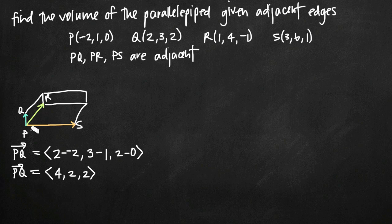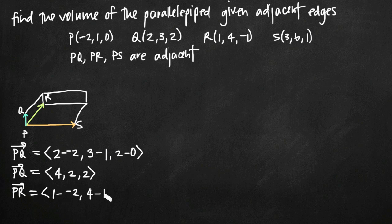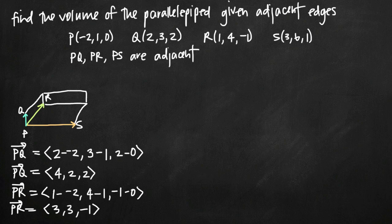We want to do the same thing with PR and PS. The vector PR is going to look like this: we take our components from R and subtract the components from P. So we get 1 minus negative 2, 4 minus 1, negative 1 minus 0. When we simplify, we get the vector PR equal to (3, 3, -1).